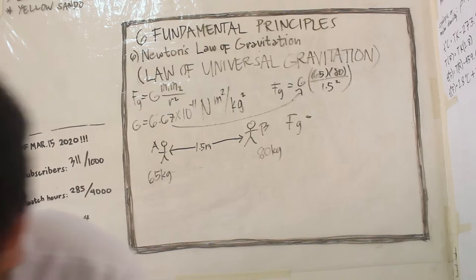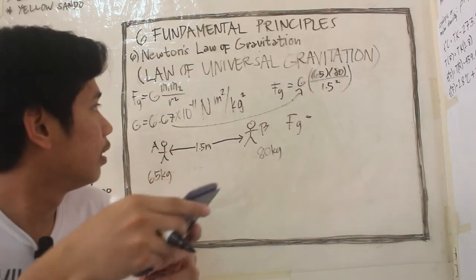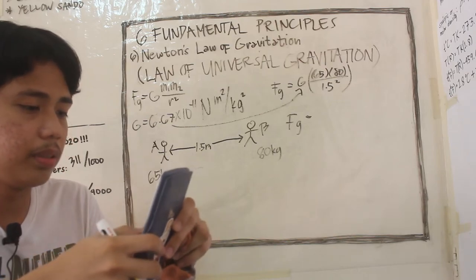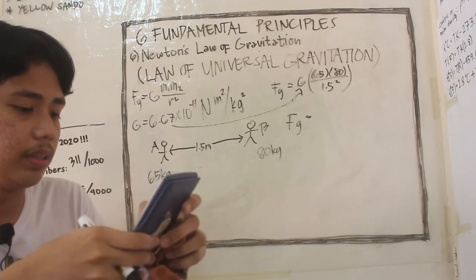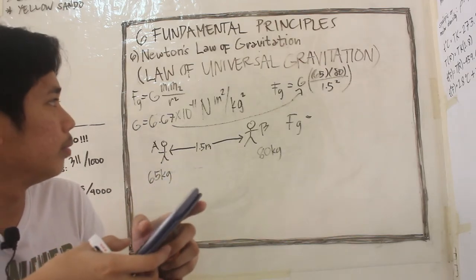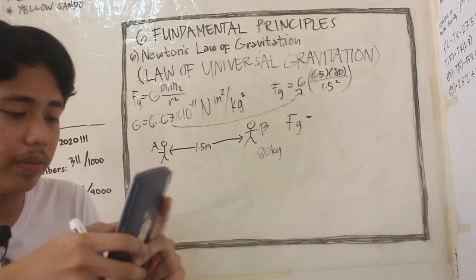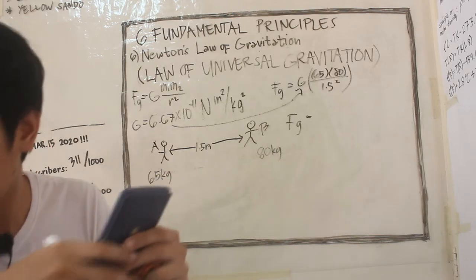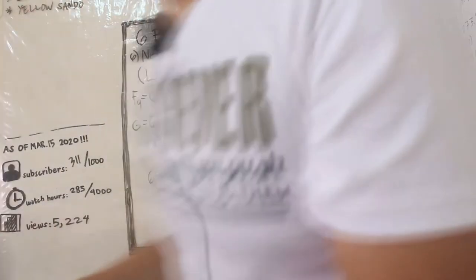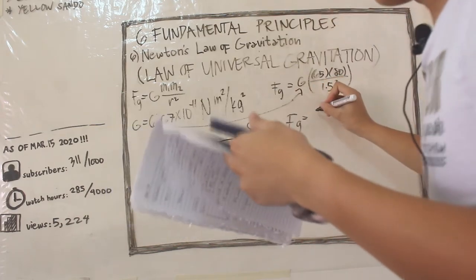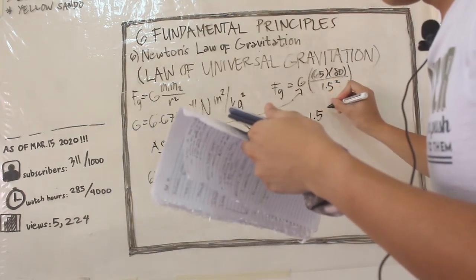If we compute this on our calculator, 6.67 times 10 raised to negative 11 times 65 times 80 over 1.5 squared, we get a gravitational force of 1.54 times 10 raised to negative 7.